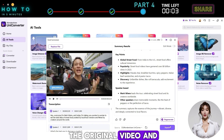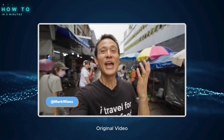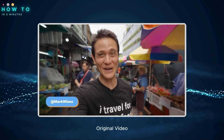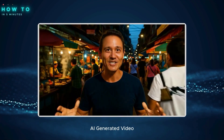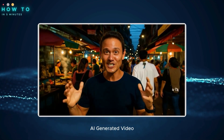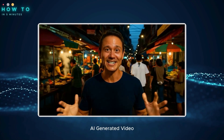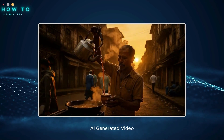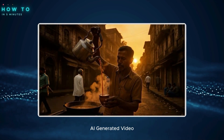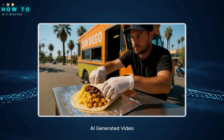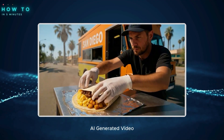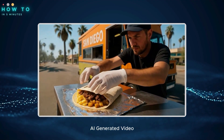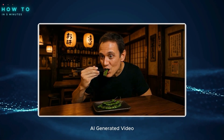Here's an example of the original video and the AI-generated version using this method. [Original]: 'I'm Mark Wiens and today I'm taking you sunrise to sunrise to eat the best bites of street food.' [AI version]: 'There's no better way to connect with a culture than through its street food. Our adventure begins with sunrise in Calcutta, India — a hot steaming cup of masala chai. Next, San Diego for a legendary breakfast burrito, then Japan at an izakaya for shishito peppers.'